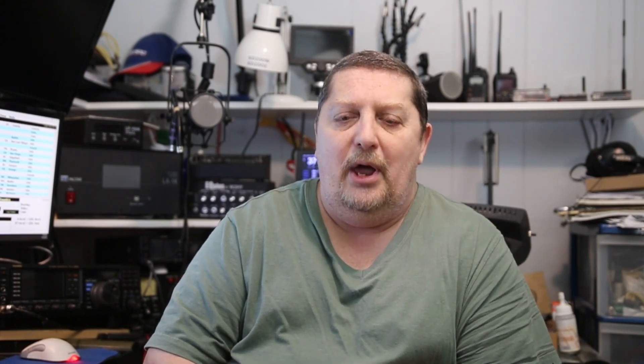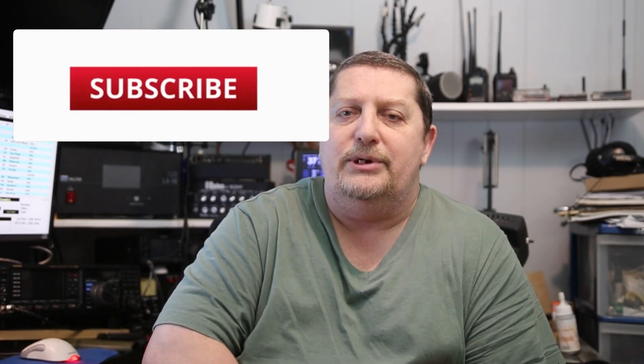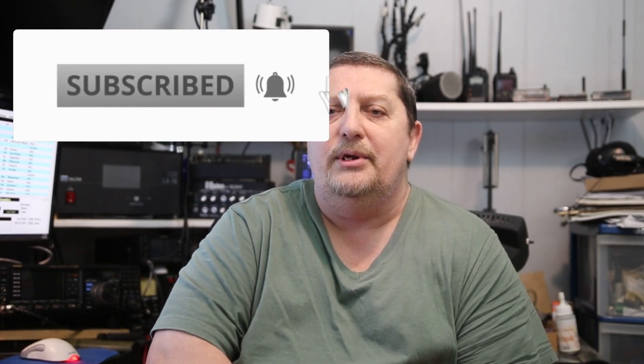Step number three is the tone. With the tone you could have it off, which means anybody can transmit or receive, but if you have another close by repeater on that same frequency they'll be interfering with you. So you have a thing called a tone. When you set the tone you have two choices: tone or tone encode slash CTCSS. The encode means it sends a low pitch frequency on the bottom of the carrier the whole time you're using the repeater, and this tone tells the repeater to open up — it's okay to transmit.